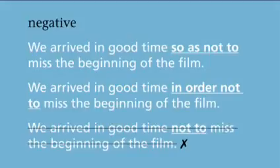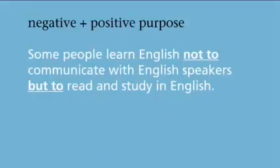'Not to' without 'so as' or 'in order' is not usually correct in purpose clauses. But we can use 'not to' when the negative purpose clause is followed by a positive purpose clause: 'Some people learn English not to communicate with English speakers, but to read and study in English.'